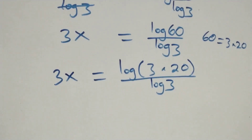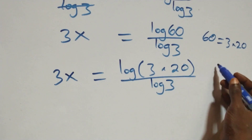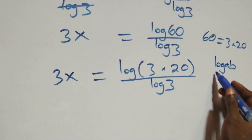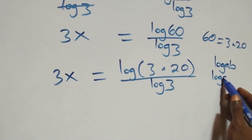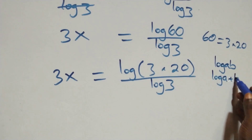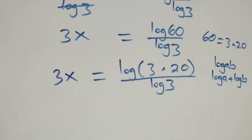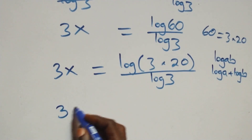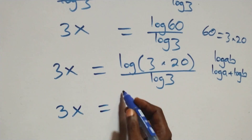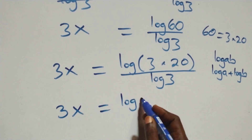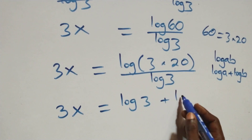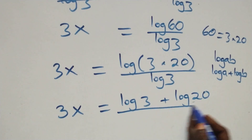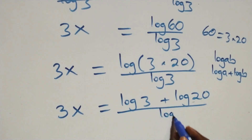This follows the law of logarithms: log of A times B is the same thing as log A plus log B. So what we have here becomes three x equals log three plus log twenty, all over log three.